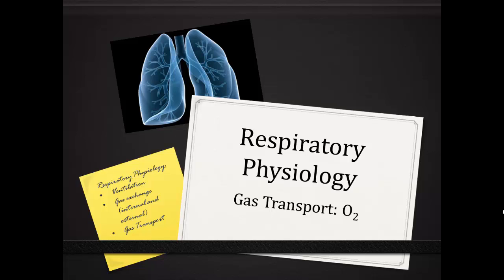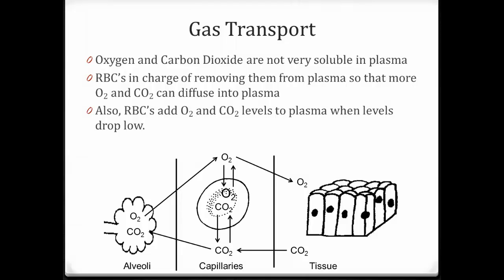Now we're going to look at the last part of respiratory physiology, and that's gas transport. We've seen how to breathe, getting oxygen into our lungs and CO2 out. We've looked at gas exchange - how oxygen or CO2 moves across the respiratory membrane, or from blood into tissues and vice versa. But what we haven't done is looked at how gases are transported in the blood. Oxygen and carbon dioxide aren't very soluble in plasma, so we need something to store excess oxygen and CO2, and that's the job of the red blood cells.